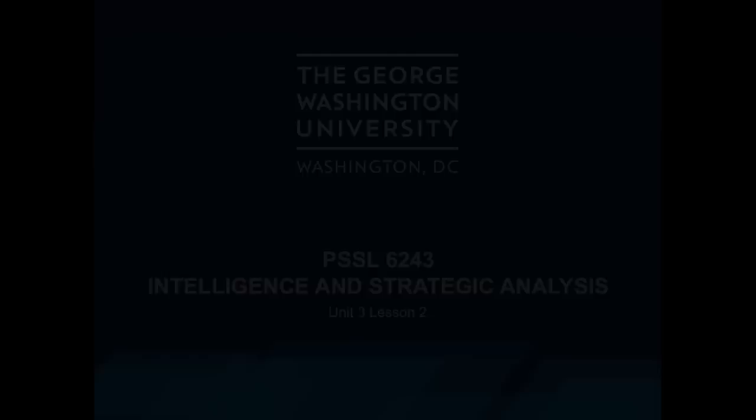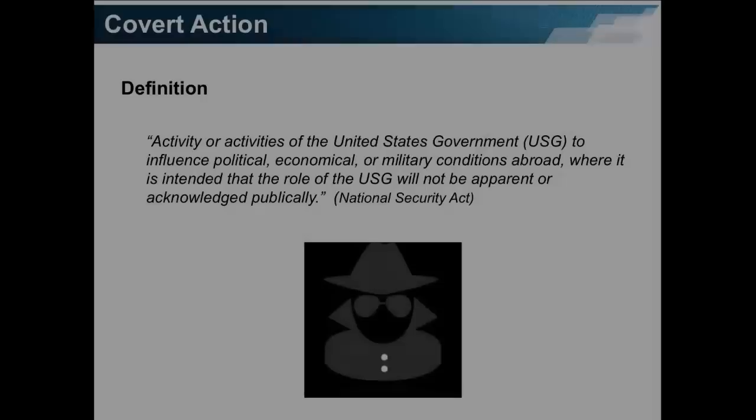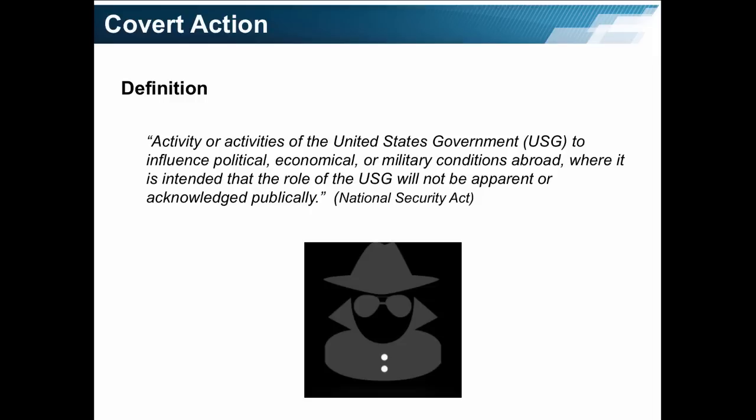Hi, we meet again. We are at Unit 3, Lesson 2. In this lesson, we study covert action: historical evolution, justification, requirements, approval, issues attendant to them, ethical dilemmas to consider, who has oversight of covert actions in the U.S. We look at two lessons learned — a failure, Iran-Contra, and a success, the assassination of Osama bin Laden. Then we conclude.